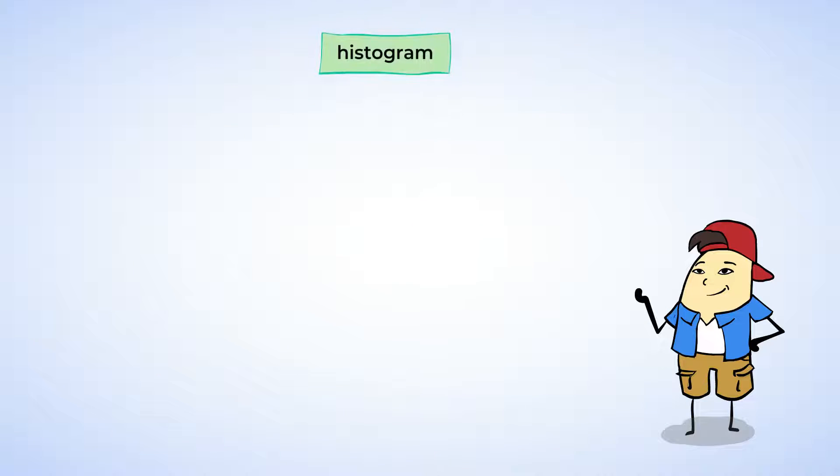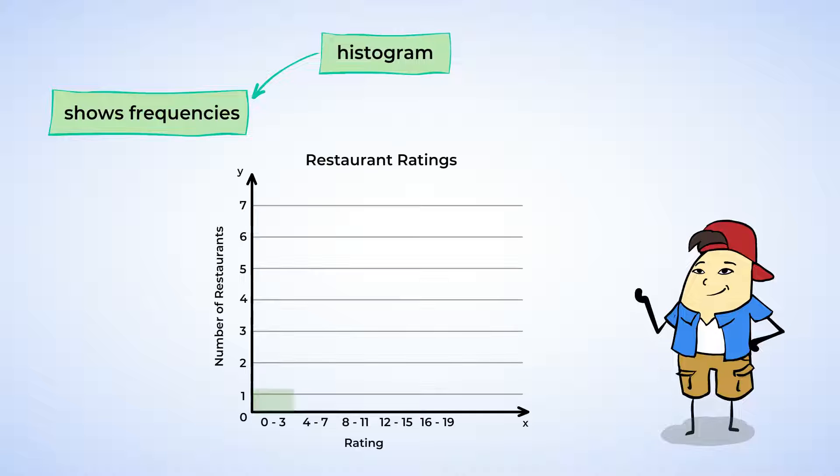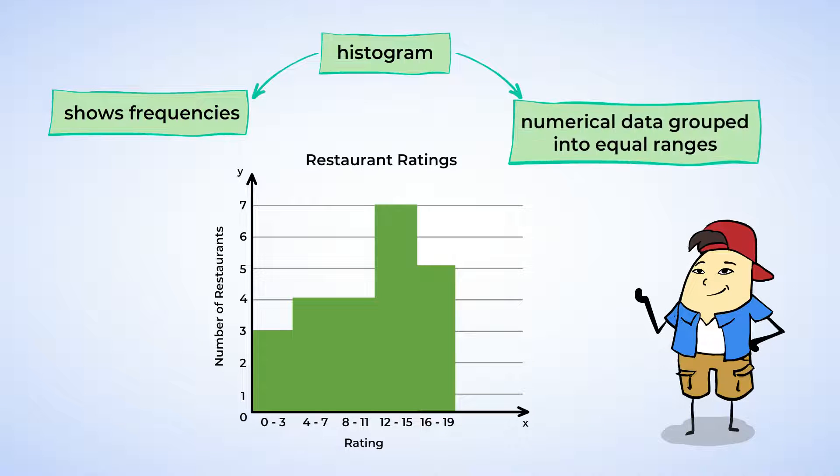The histogram is another commonly used graph to show frequency distribution. Histograms use bars to represent data. They're looking a lot like a bar graph, but they always display numerical data grouped into equal ranges.